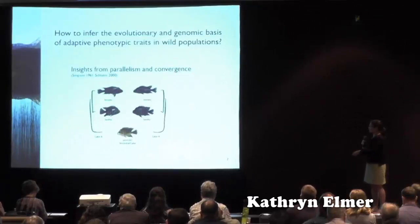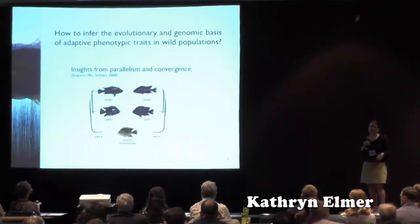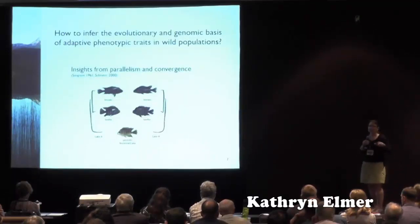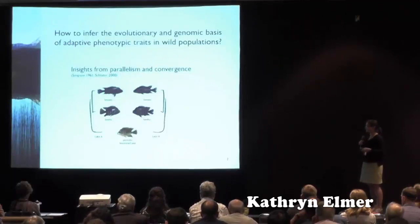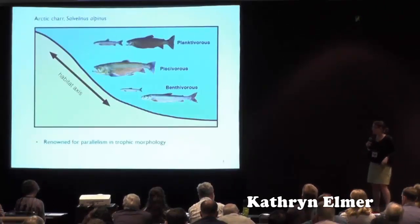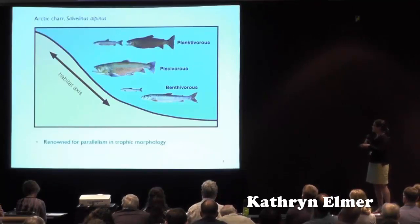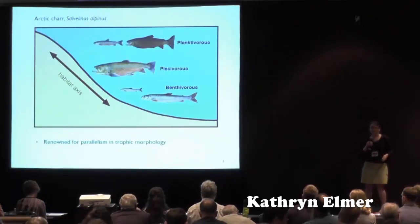The focus I've taken in my research is to use the insights possible from parallel or convergent evolution to remove some of this noise from local stochastic variation. So we have an ancestral lake population that repeatedly colonizes new lakes and similar phenotypes arise in each of those different lakes. Arctic char are fantastic models for this because there are a number of different ecotypes that have diverged along the depth axis, including benthivores, planktivores, and piscivores — a renowned system for rapid divergence in trophic morphology.